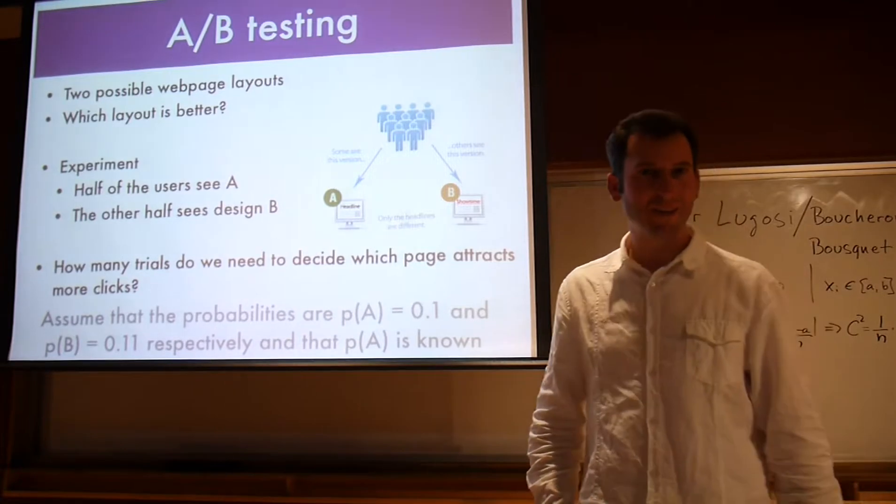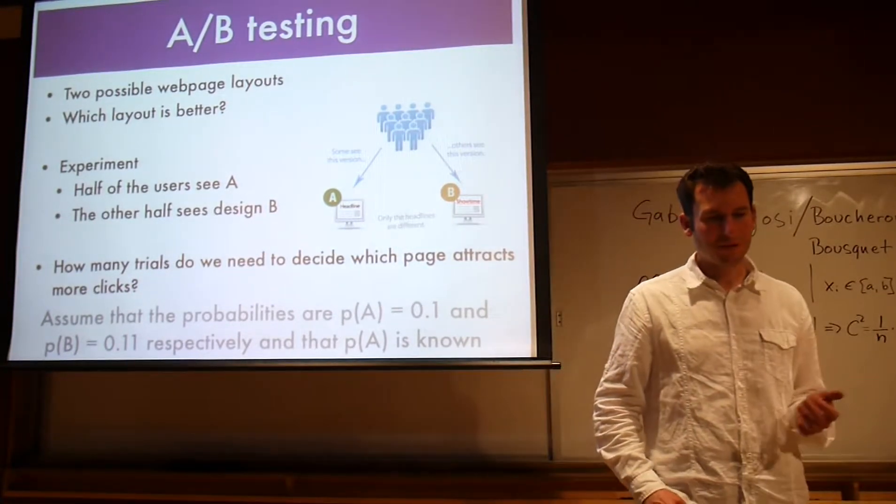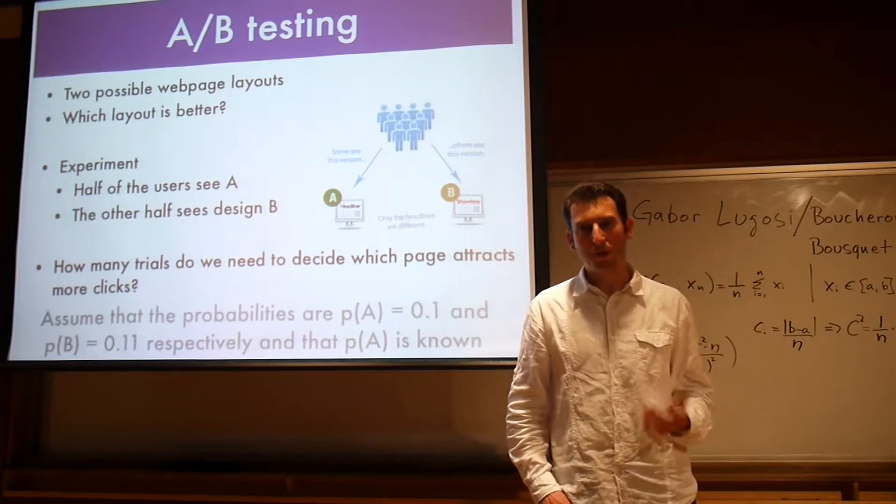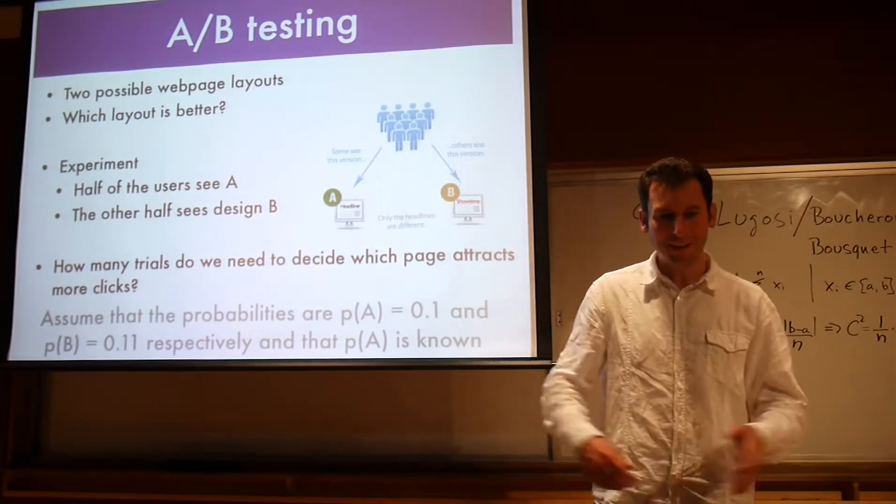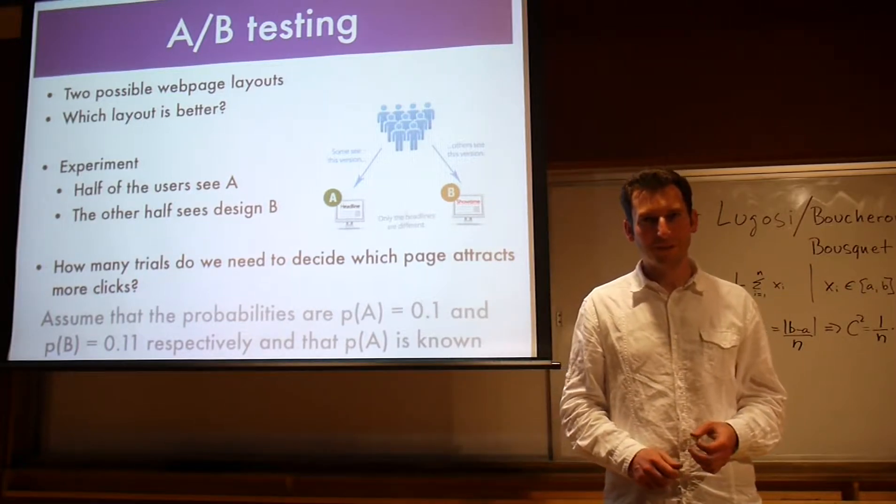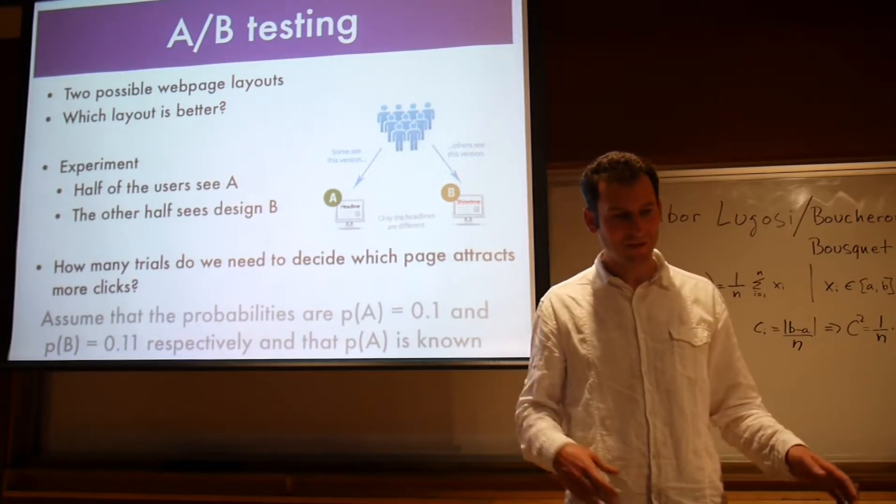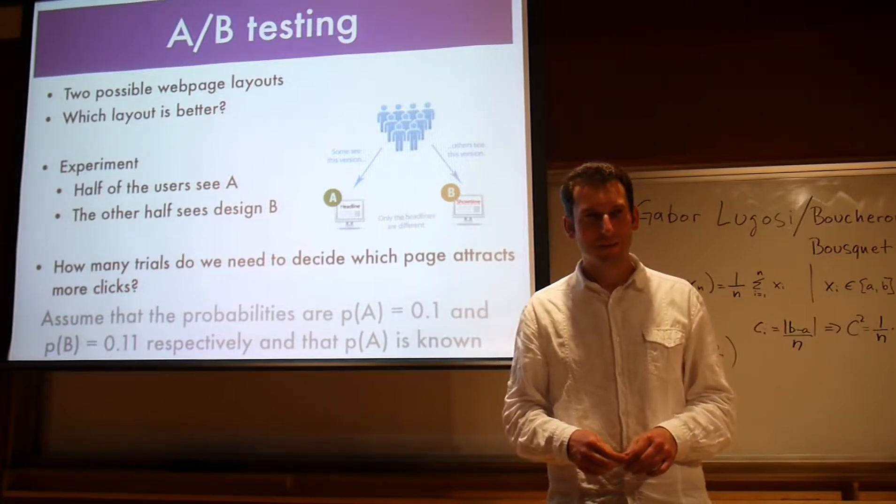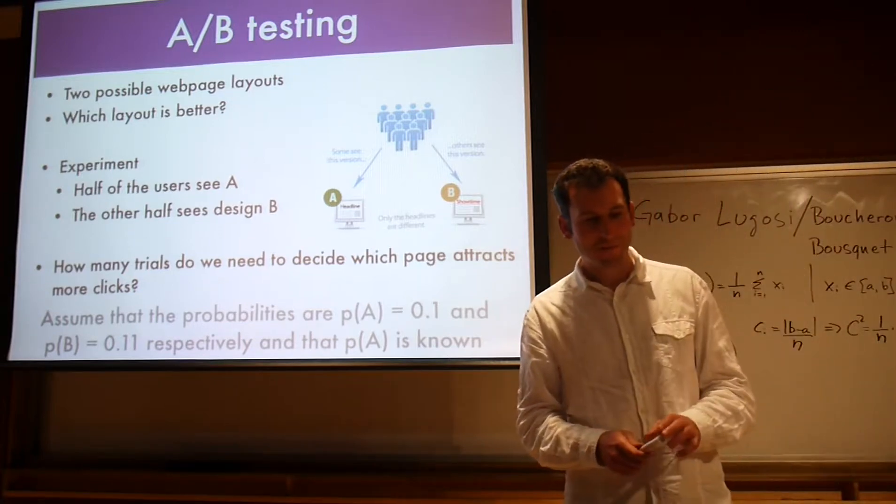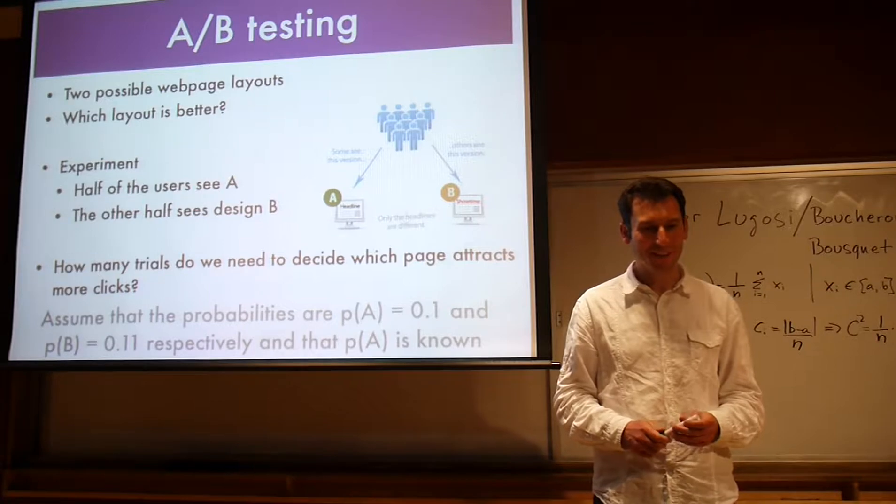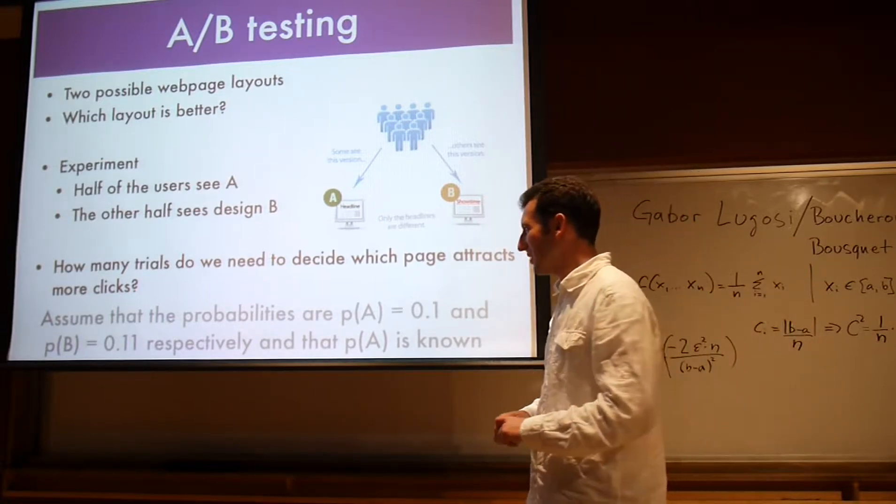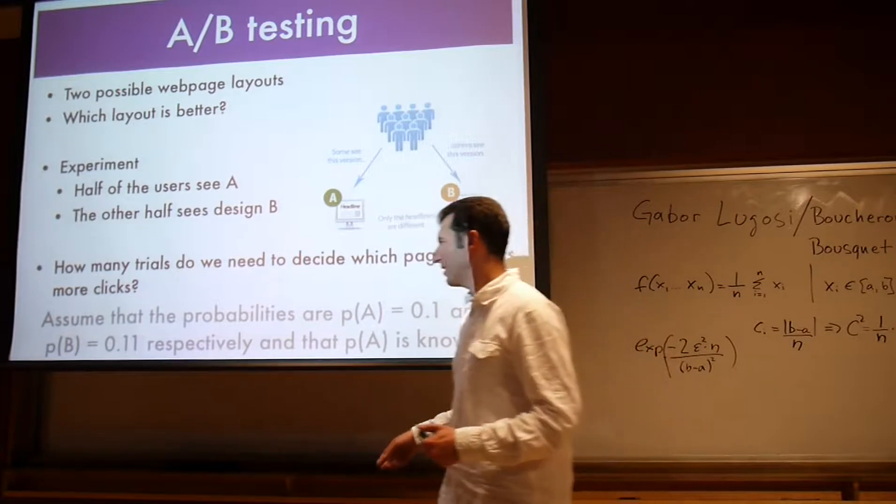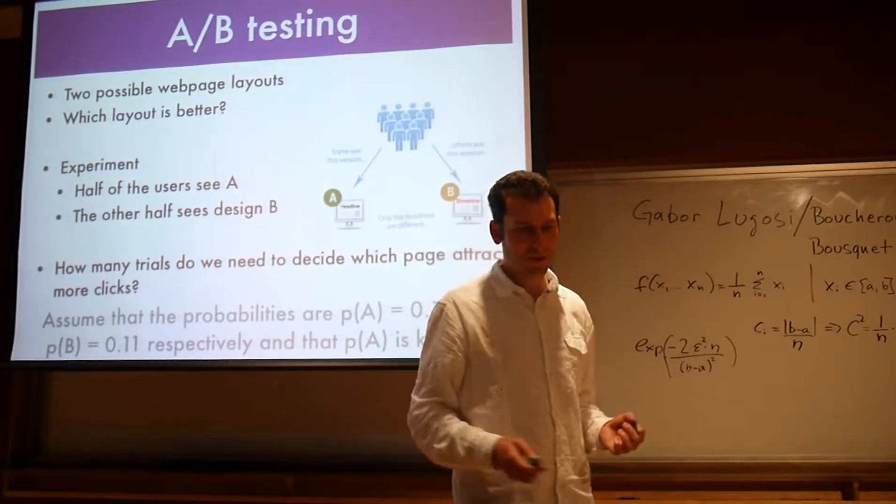Let's use it for something like hypothesis testing. The simple question is: I have two web page layouts and I want to find out which one's better. I could use my designer, or I could use the scientific method - we test and see how it works. One nice randomized experiment is half of the users see design A, half see design B, and then we check how much money I'm making or how many clicks I get. Let's assume that for design A the probability is 10% that somebody clicks, and in the other case it's 11%. So they are fairly close. Let's see how much we actually need.